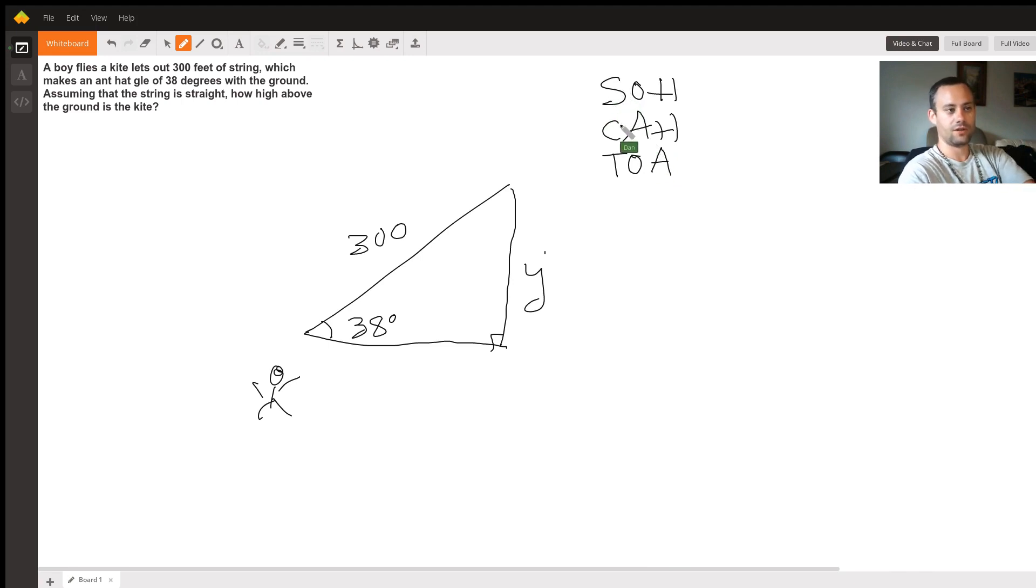The S stands for sine, the C stands for cosine, the T stands for tangent. Here's the angle, so opposite means touching the right angle but not touching this angle. So we have sine is y over 300 equals sine of 38 degrees.